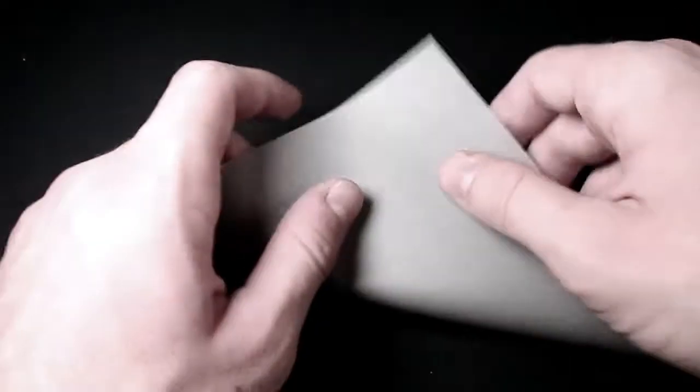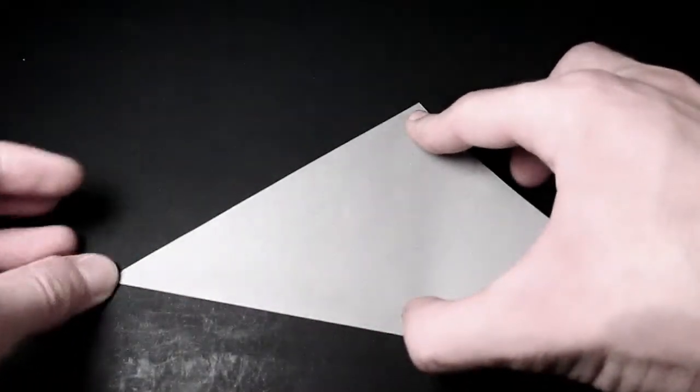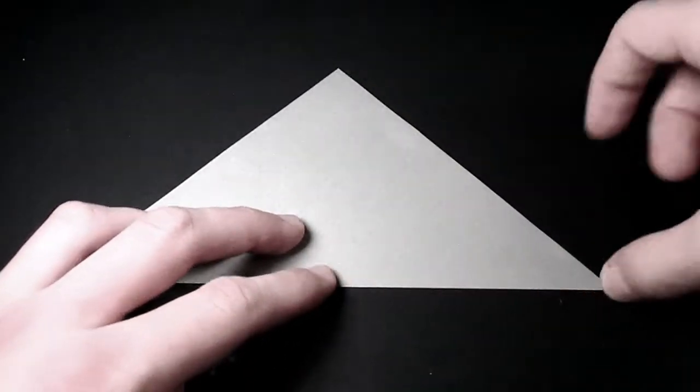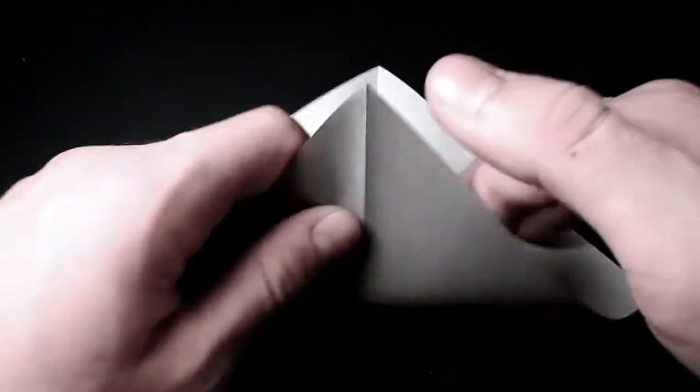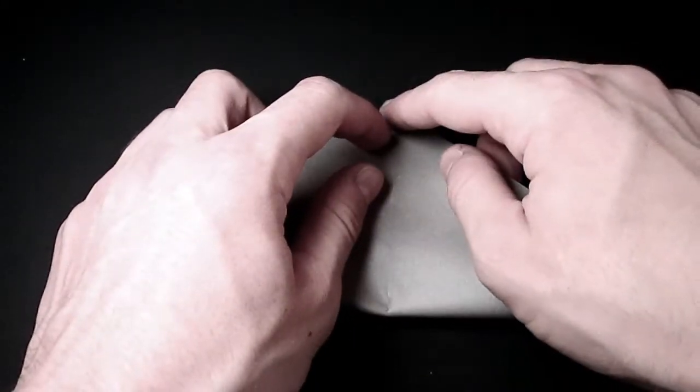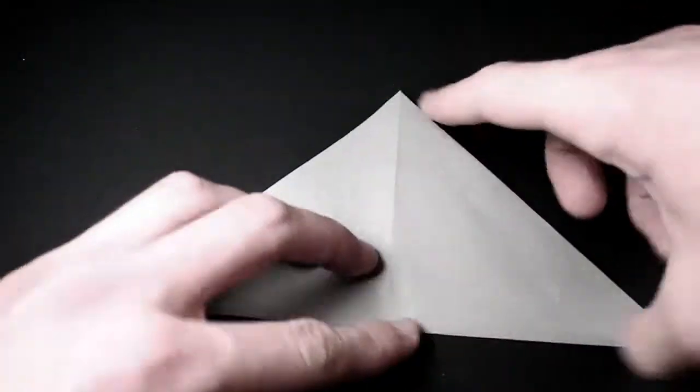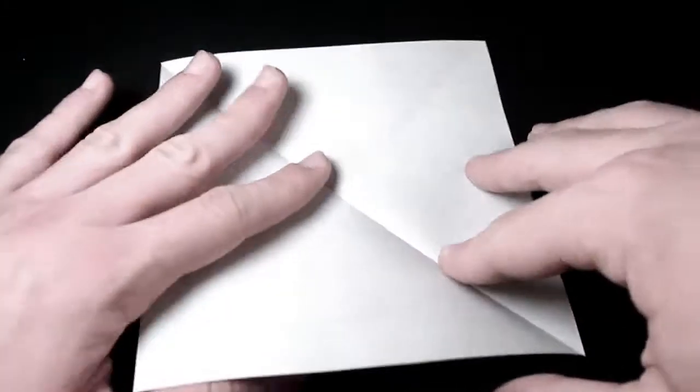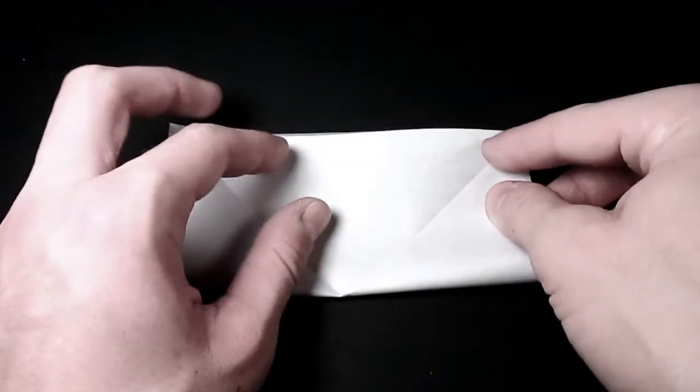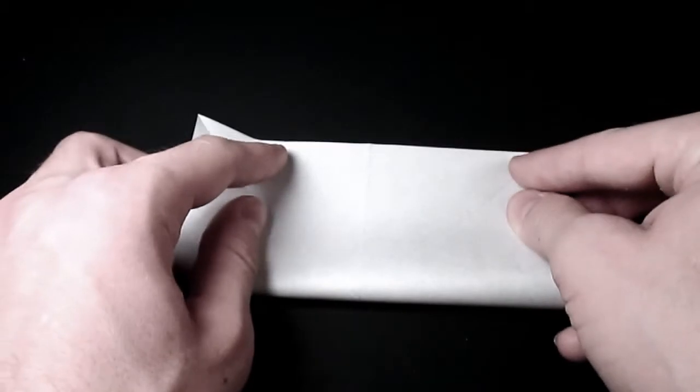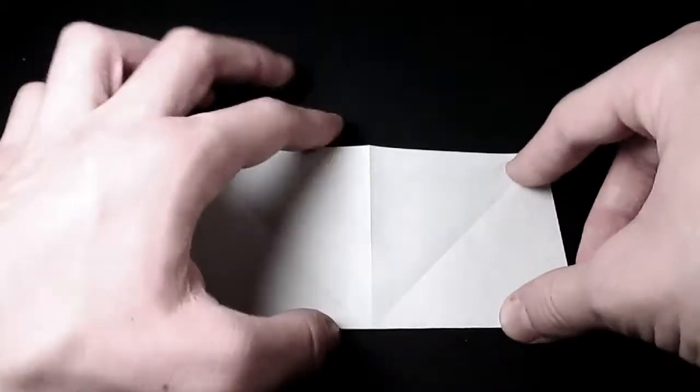So we're going to start by valley folding in half diagonally. And then unfold and fold in half from the other diagonal. Then we're going to unfold that as well. And we're going to turn the paper over and valley fold in half horizontally. Then unfold that and fold in half in the other direction. And then unfold.